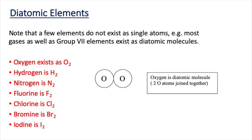Oxygen, hydrogen, and nitrogen are all gases and they are all diatomic: oxygen is made up of O2 molecules, hydrogen H2 molecules, and nitrogen N2 molecules. The other diatomic elements you need to be aware of are the group seven elements — fluorine F2, chlorine Cl2, bromine Br2, and iodine I2. When writing chemical formulae, remember that elemental gases such as oxygen, hydrogen, and nitrogen are diatomic, and group seven elements fluorine, chlorine, bromine, and iodine are also diatomic.